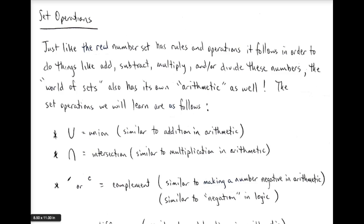What we'll do is form sets by doing set arithmetic and show how that looks in a Venn diagram as well. The first thing we want to do is know what our basic operations are. Just like how we have addition, subtraction, multiplication, division, and our negation sign, we have things that are similar to that in set theory.